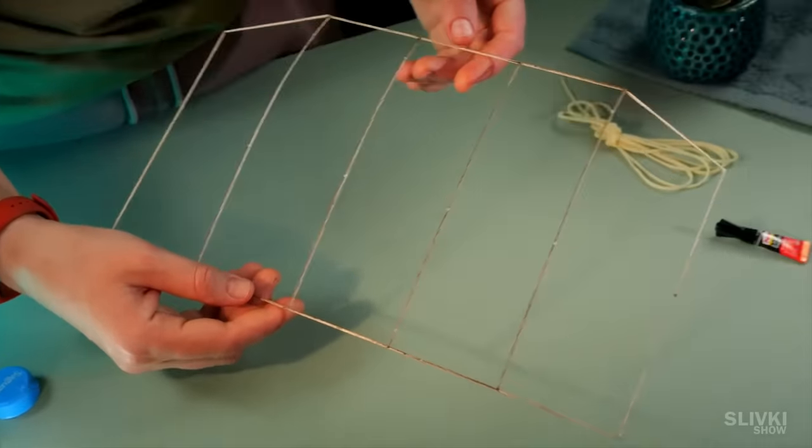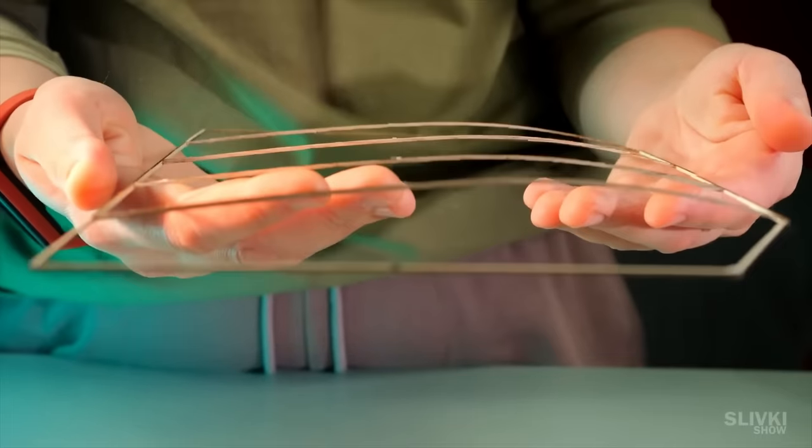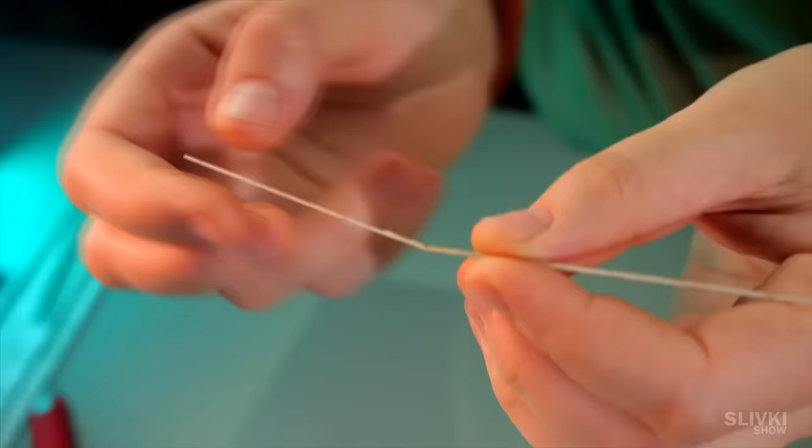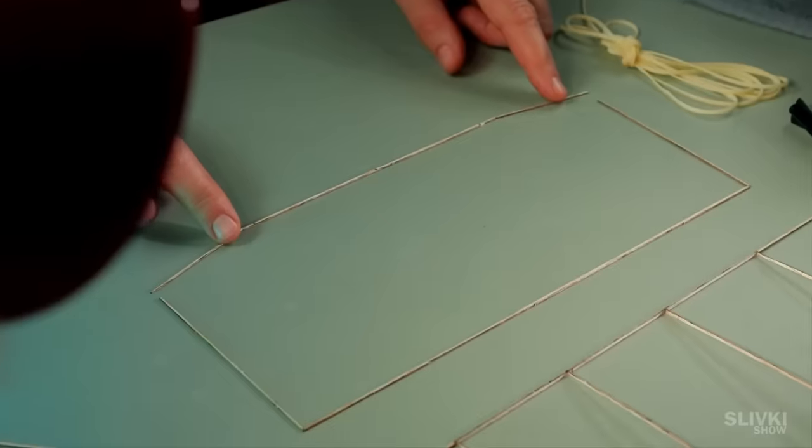As a result, we get such a front wing with a curved top for better aerodynamics. Now we need to loosen the bottom of these sticks and do the same to get a similar wing but smaller.